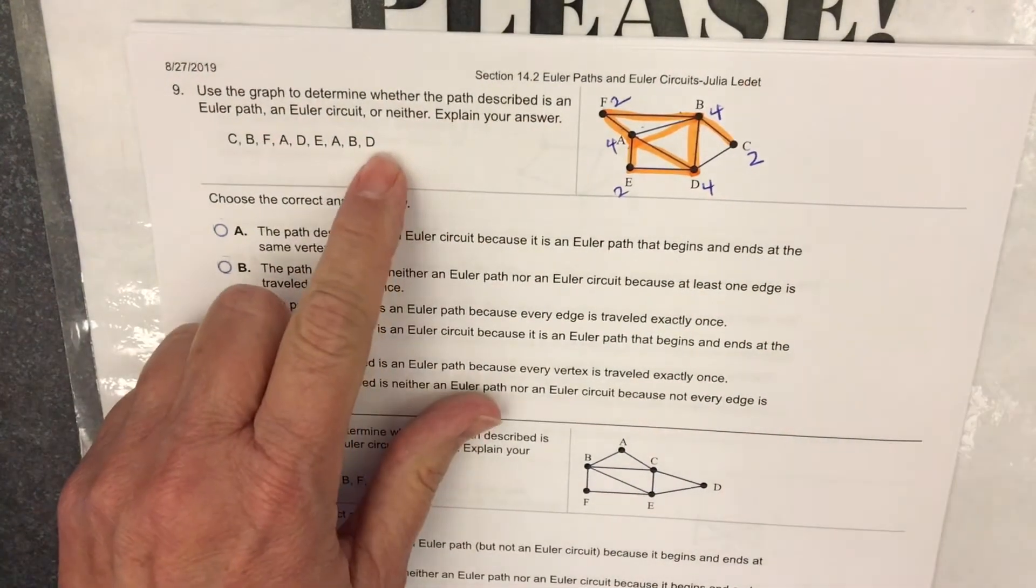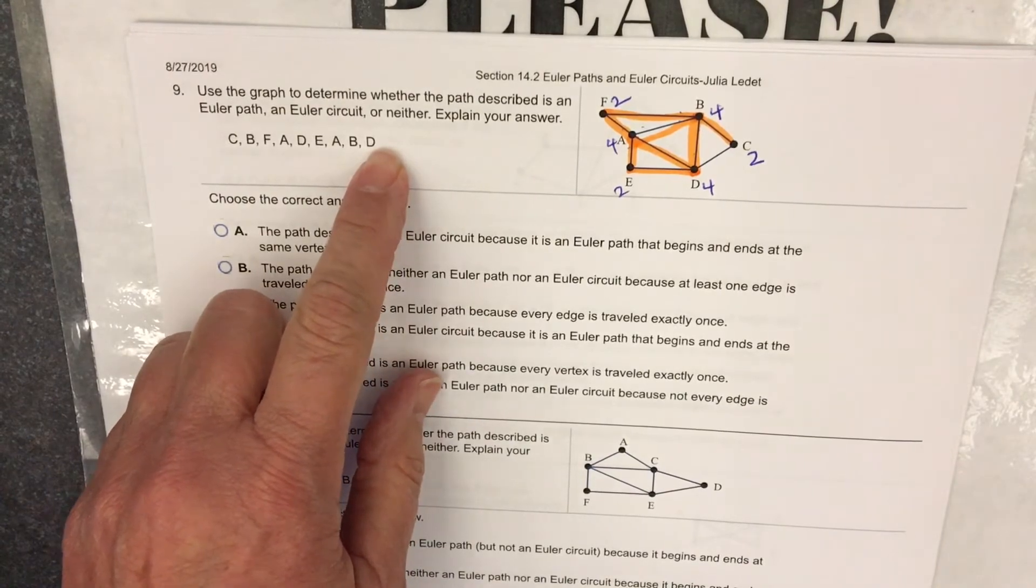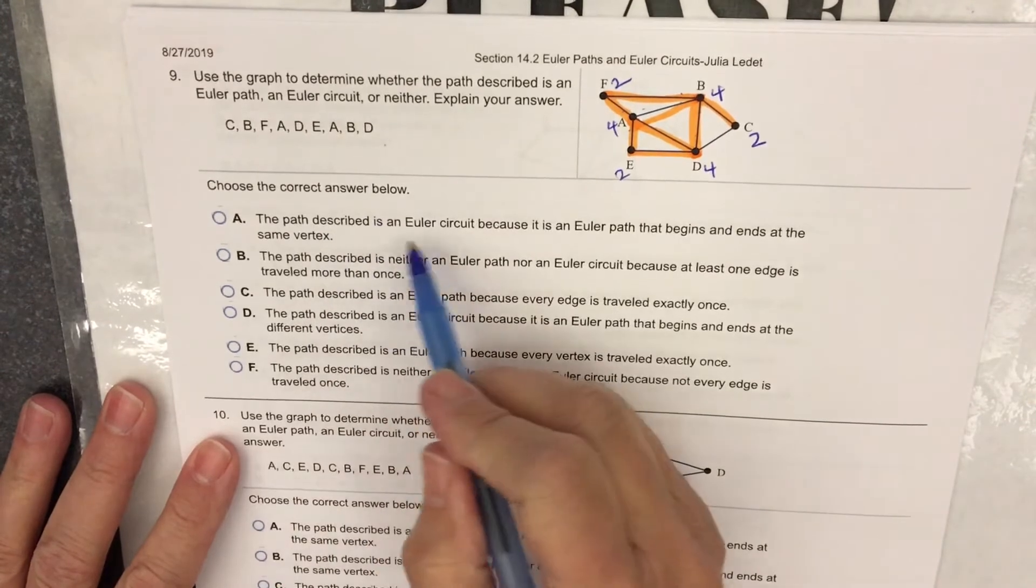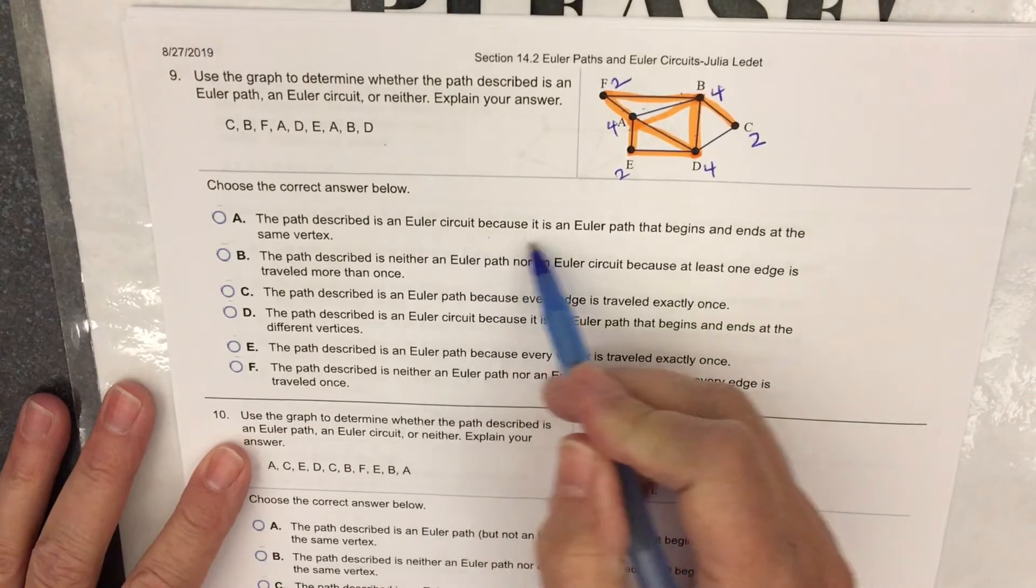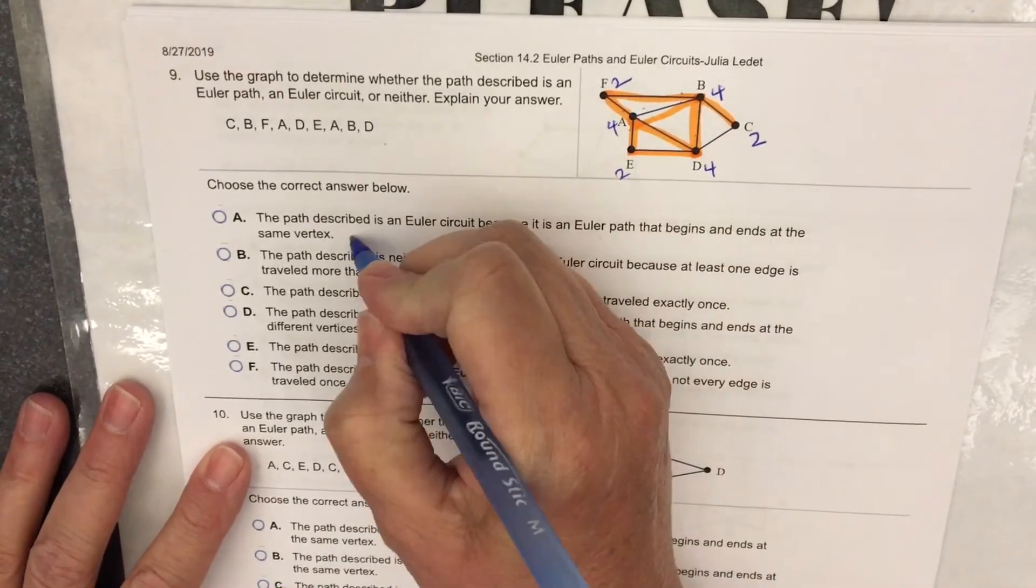Now, had they put comma C, it would have been an Euler circuit. Let's see. The path described is an Euler circuit because it is an Euler path that begins and ends at the same vertex. Well, that's just not true.